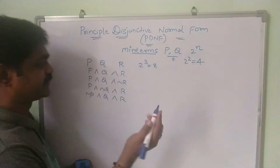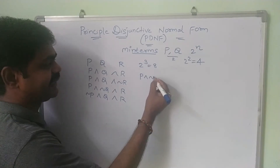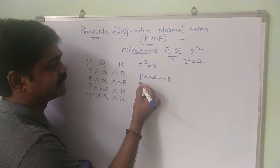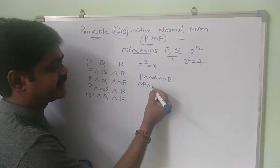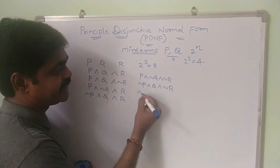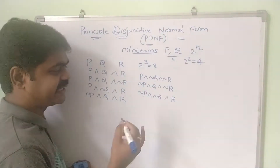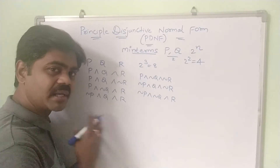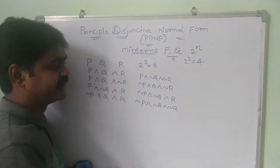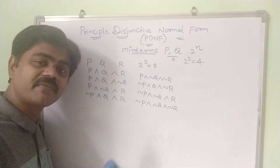Continuing the 8 minterms for three variables: the fourth is P∧¬Q∧¬R, the fifth is ¬P∧Q∧R, the sixth is ¬P∧Q∧¬R, the seventh is ¬P∧¬Q∧R, and the eighth is ¬P∧¬Q∧¬R. The number of minterms depends on the number of variables.